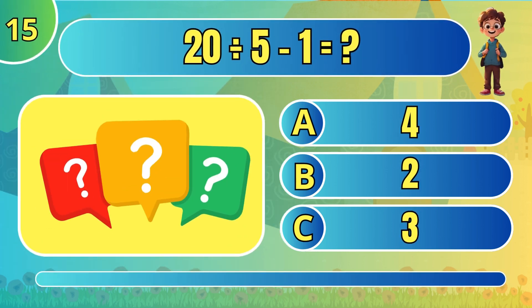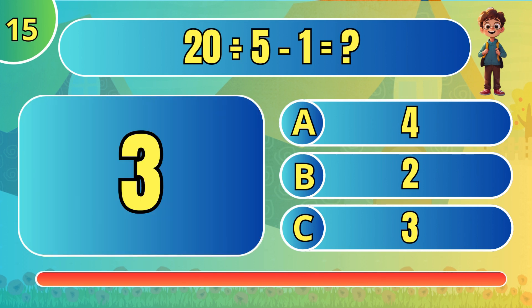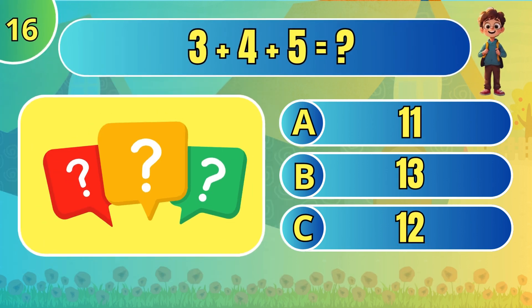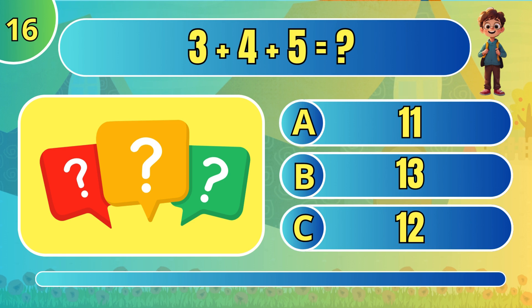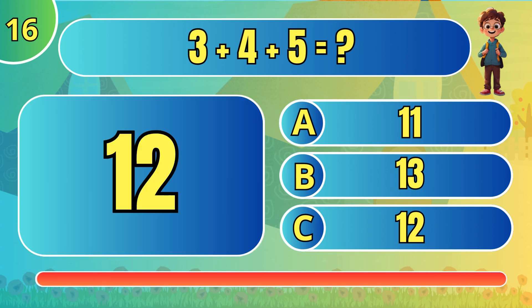Divide 20 by 5 and subtract 1. 3. Add 3, 4, and 5 together. 12.